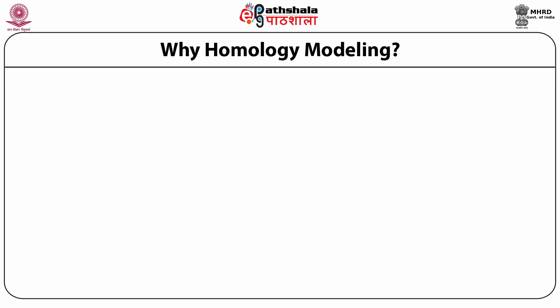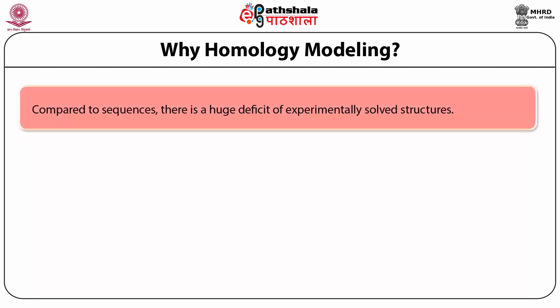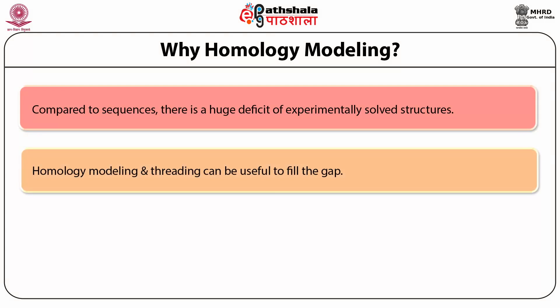It is also useful for the identification of conformational epitopes in areas like vaccine design. The reason we need to do this is that compared to the huge number of sequences, the number of experimentally solved structures is very small. In order to bridge this gap, homology modeling and a related technique called threading go at least some way to fill it up.